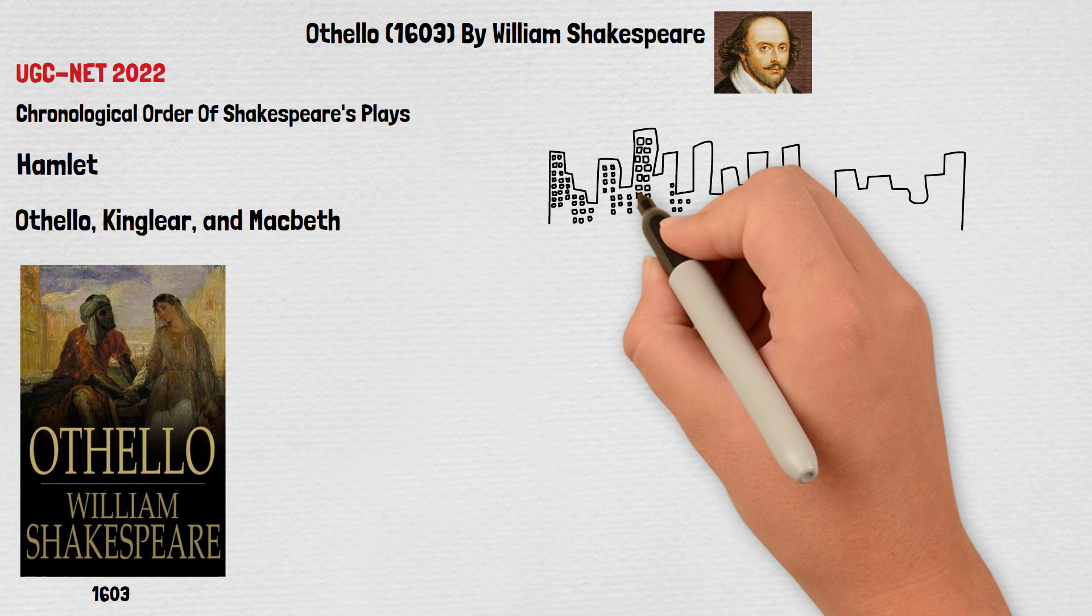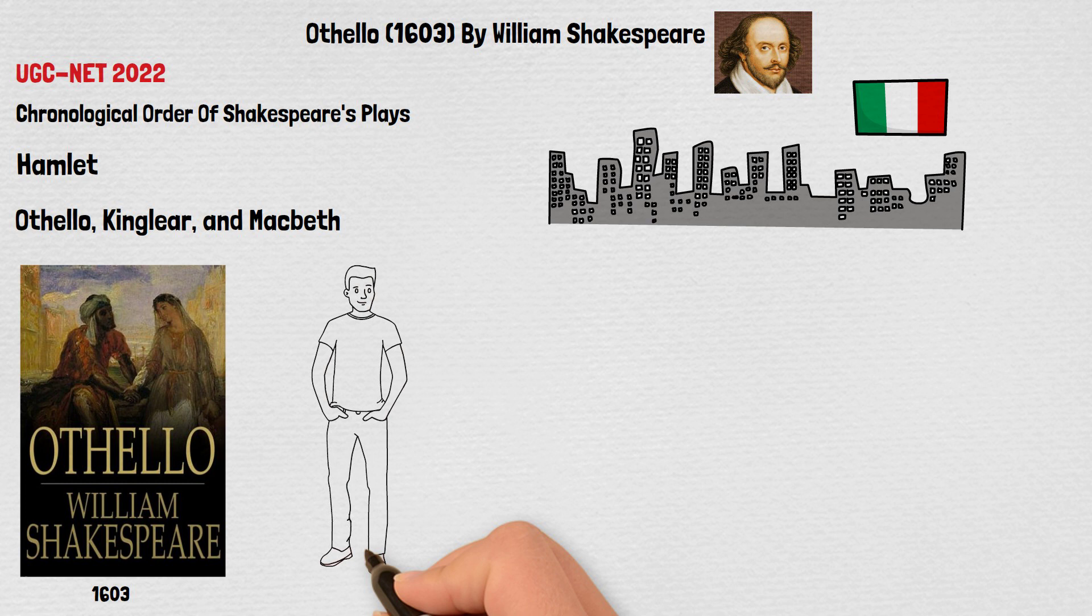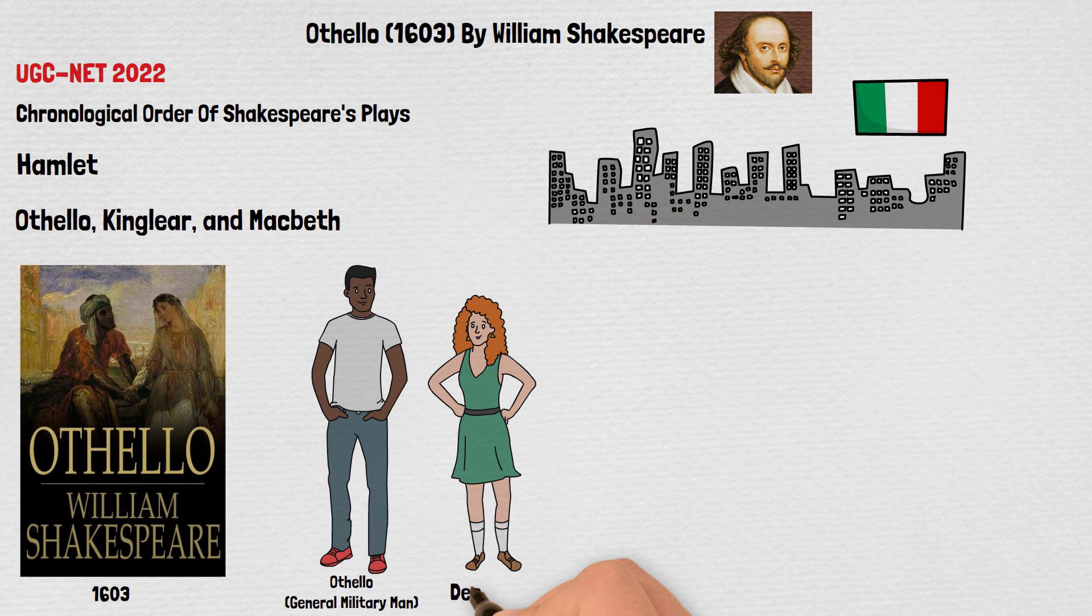So the setting of the play is Venice, Italy. Othello is a general military man and is black in complexion. He falls in love with Desdemona, a young woman and they both start a love affair and are very happy in each other's company.